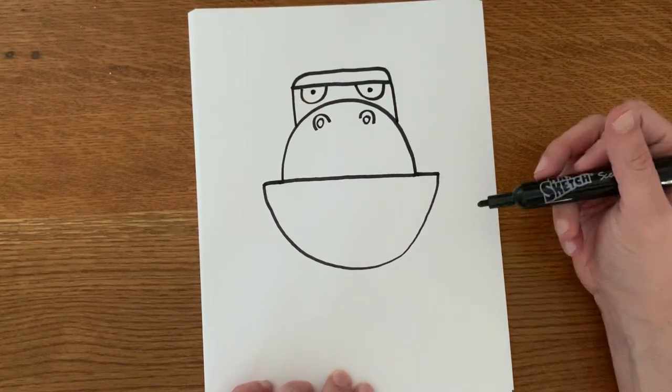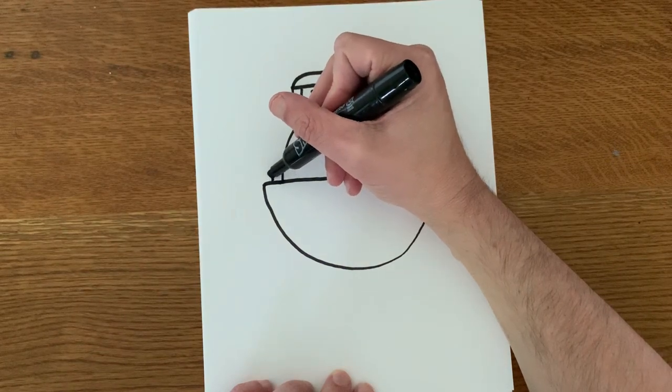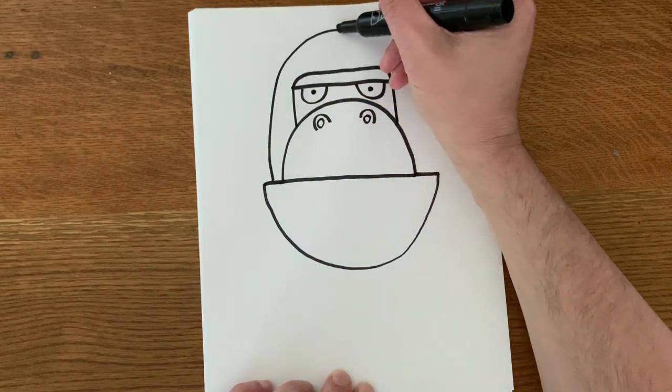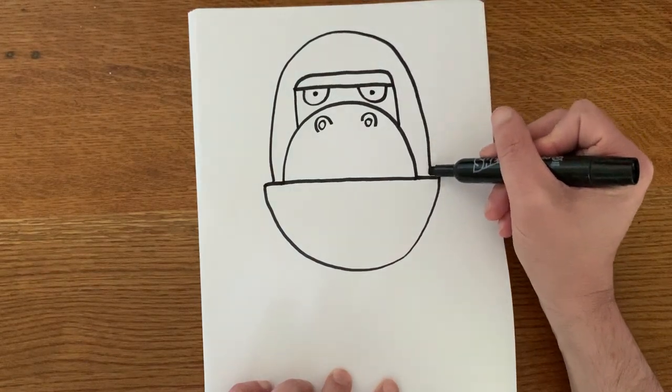Now we're ready to draw the head part, which is going to go from about right here, up, up, in a curved shape, and around.